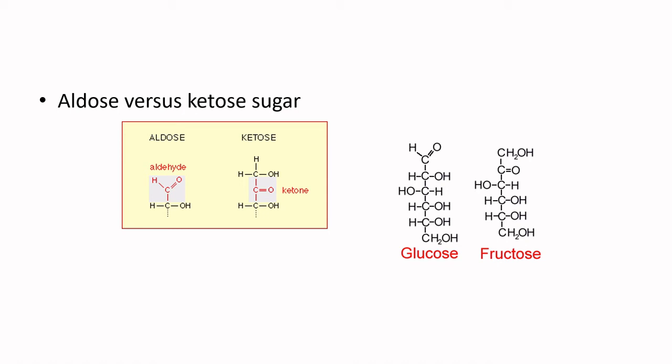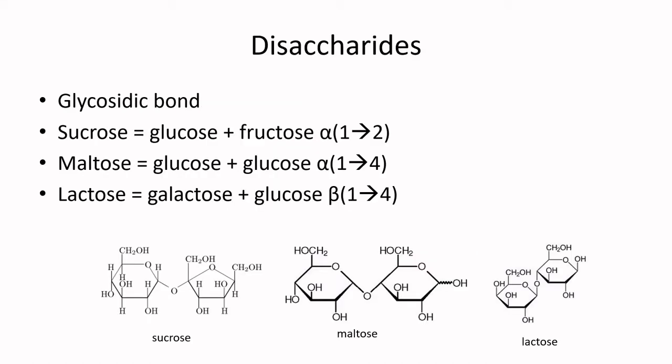Now let's jump into disaccharides — building out two-sugar molecules. The most common ones in food products: sucrose is a glucose and fructose with an alpha-1,2 glycosidic bond; maltose is glucose and glucose with an alpha-1,4 glycosidic bond; lactose is galactose and glucose with a beta-1,4 glycosidic bond — beta-1,4 implies it is in a linear stacked form. The reason we name the glycosidic bonds is that the enzymes that break these down are very specific to different glycosidic bond types, so when selecting an enzyme to cleave different sugars you may need a different enzyme for a different application.